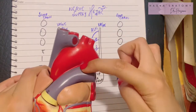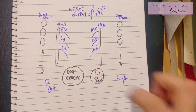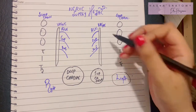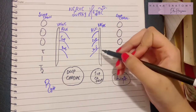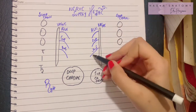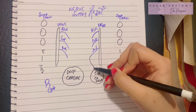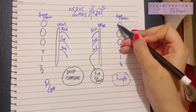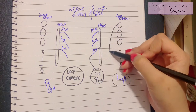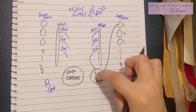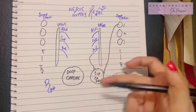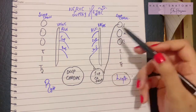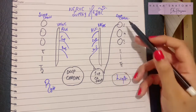The superficial cardiac plexus lies beneath the arch of the aorta. It receives branches from the left side — specifically the left inferior vagal cardiac branch and the left superior cervical cardiac branch. So the superficial cardiac plexus is formed via the inferior branch of the vagus and the superior cervical ganglion branch of the sympathetic chain.